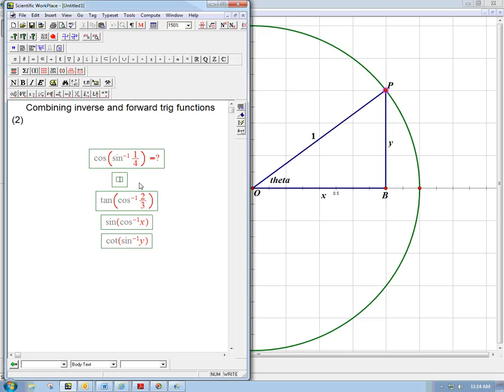All we need to do is just name the inside. Incredibly powerful. Name something. If theta is our name for inverse sine of 1 fourth, then what that means is that the sine of theta is equal to 1 fourth.